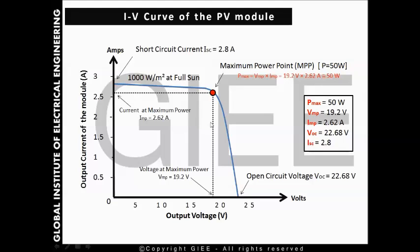Now we have this diagram showing the IV curve of the PV module. On the horizontal axis is the output voltage of the module in volts, and on the vertical axis is the output current of the module in amps. This blue curve represents the module's characteristic.